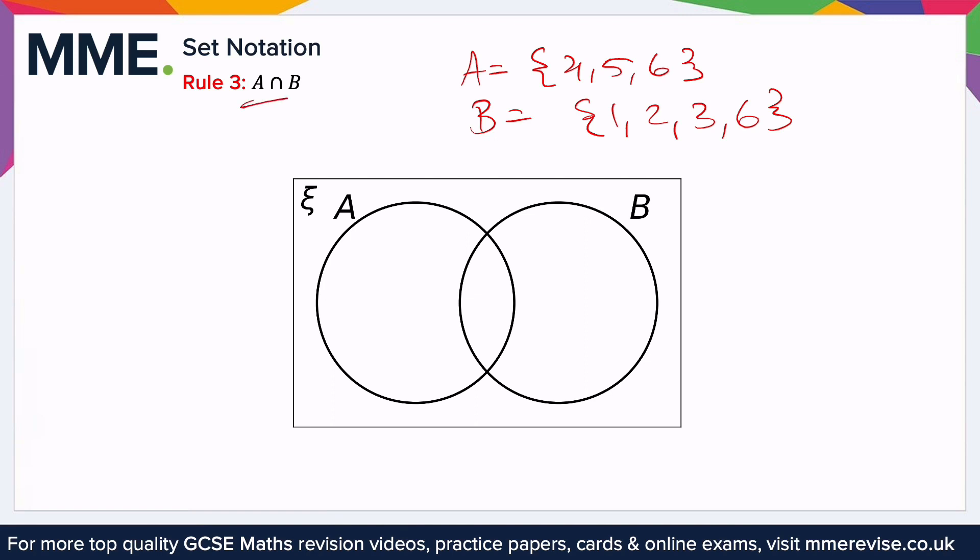Then A intersect B, A sort of cap B, like a little n in the middle, would be the numbers that are in both. So 6 is the only number that appears in both of them. So A intersect B would just be the set containing the number 6.